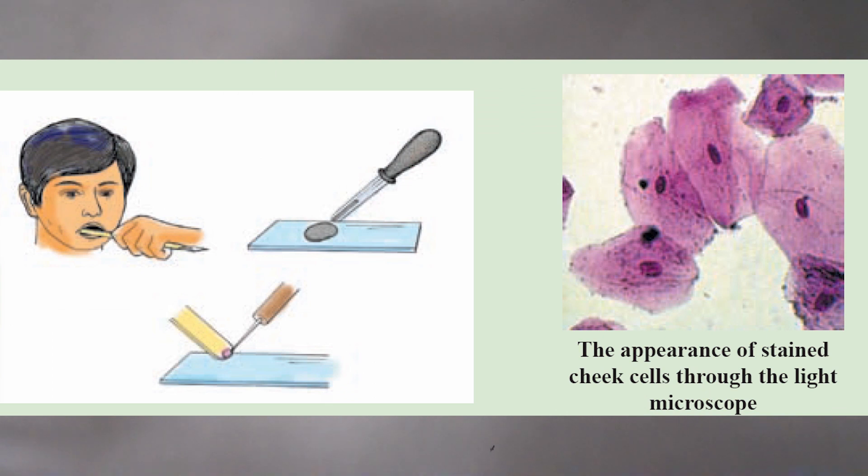To observe animal cells using cheek cells, first you have to wash your mouth and then scrape the inner side of the cheek using a toothpick, then put it on a glass slide, add a drop of water, close it with a cover slip, and then you are ready to observe it through the light microscope.